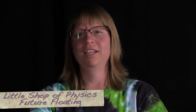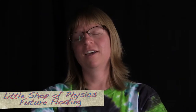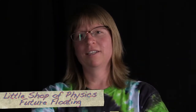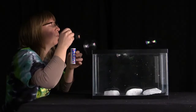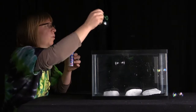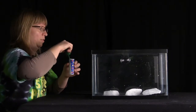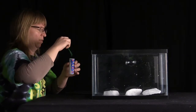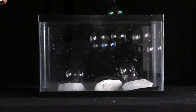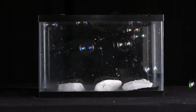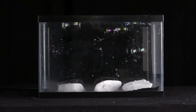The dry ice in the aquarium is frozen carbon dioxide. As the carbon dioxide sublimates and turns into a gas, it is more dense than air, which is mostly nitrogen and then a little bit of oxygen. So when I blow bubbles into it — blowing out mostly air with just a little bit of carbon dioxide — it's actually not as dense as the carbon dioxide in there, and so it floats.